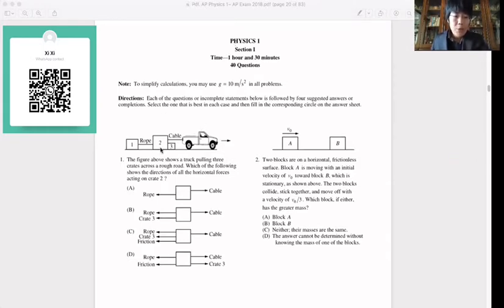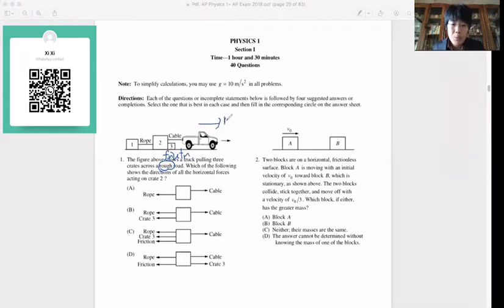Let's look at the first question. The figure above shows a truck pulling three critters across a rough surface, a rough road here. The rough surface means that we have friction. Friction opposes the motion. So with motion to the right, our friction is to the left. Friction to the left all the way.